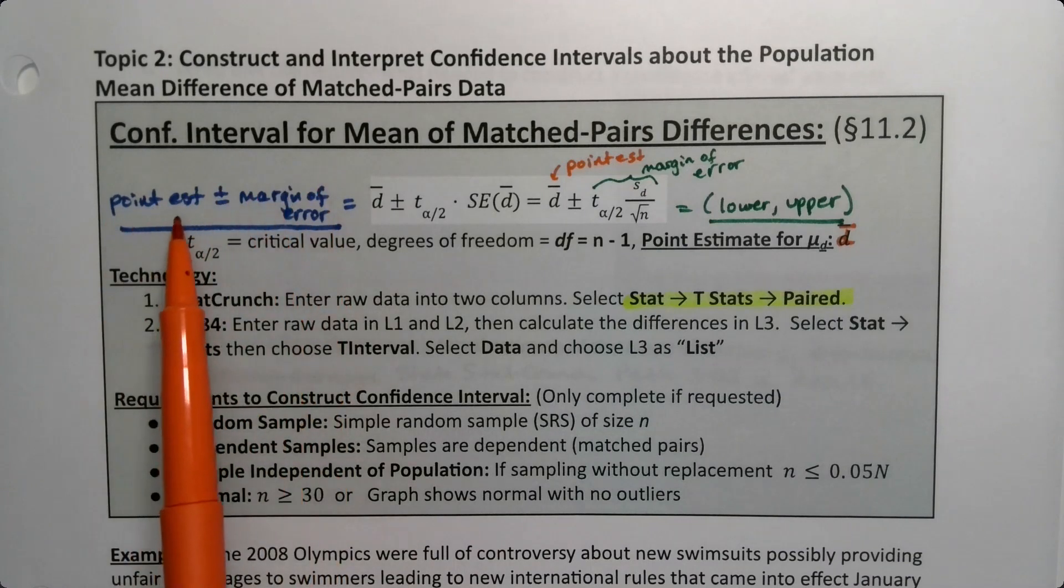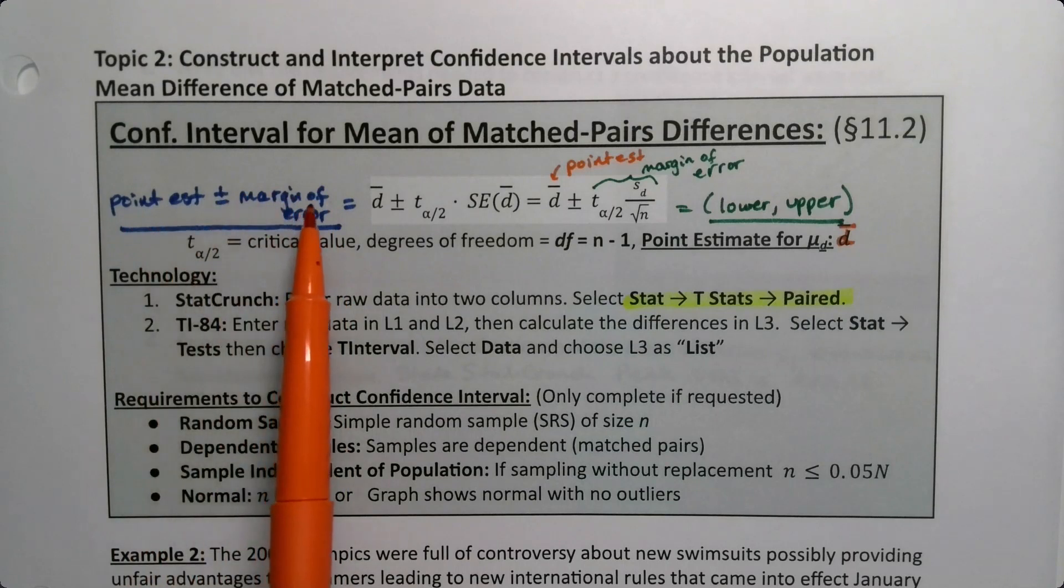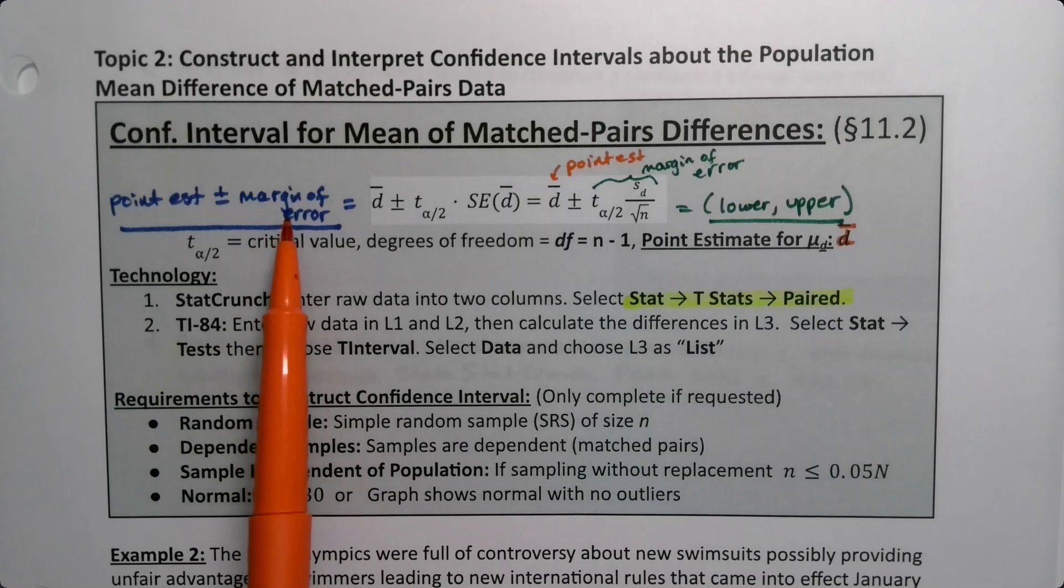The point estimate is the center of your interval, it's the foundation of your confidence interval, and then the margin of error is the give or take that you need in order to create the confidence that you want that the population value is there.